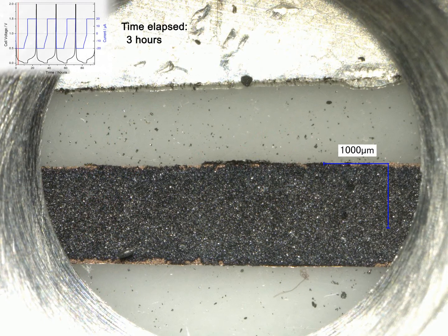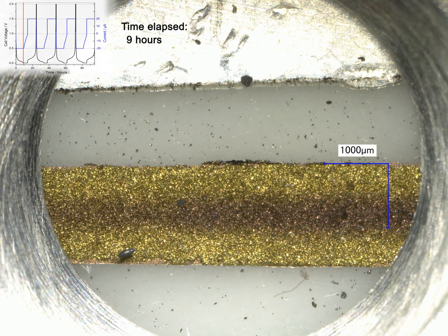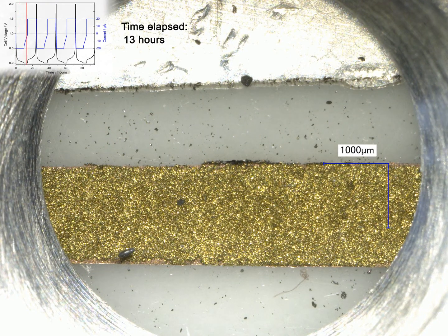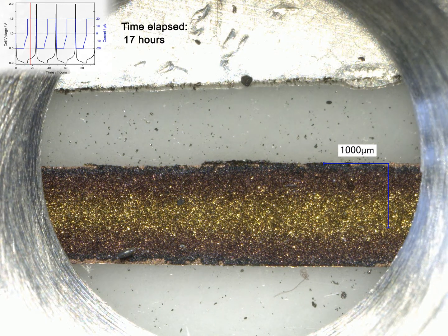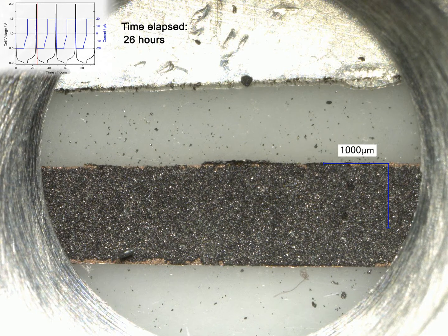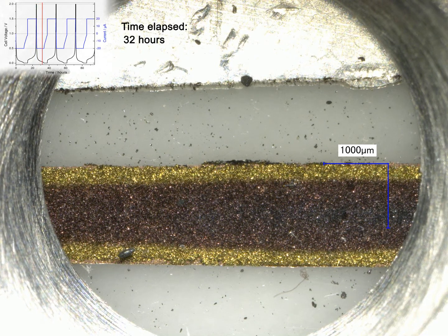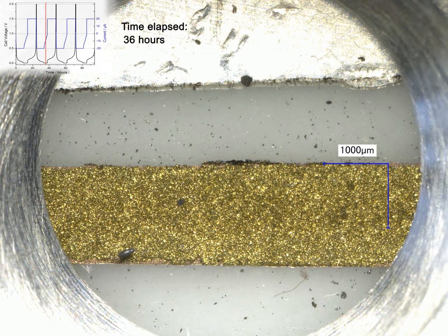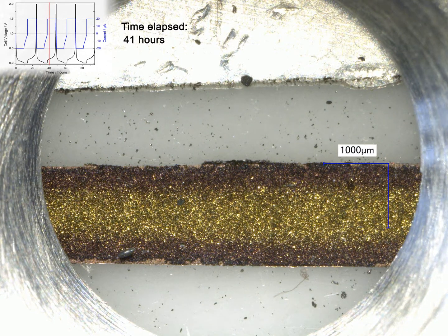The following time-lapse video shows the lithiation and delithiation of the graphite strip during four subsequent cycles. The charge-discharge profile is shown at the top left of the screen, with a red line indicating the current state of charge.